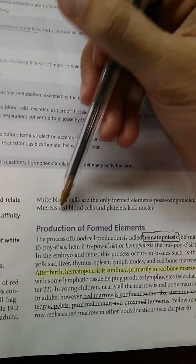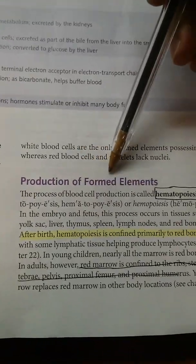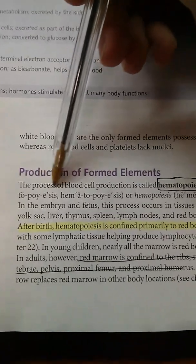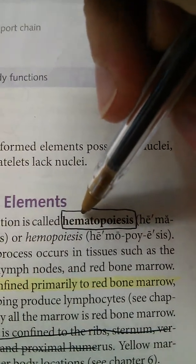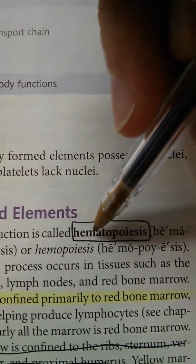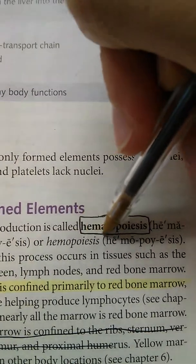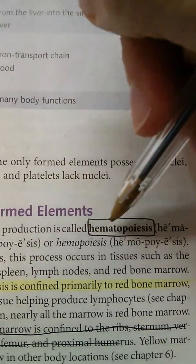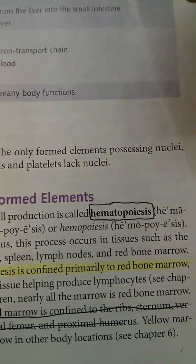Next, we'll be talking about production of formed elements — the red blood cells, white blood cells, and platelets — so this is telling you how they are made. The process of blood cell production is called hematopoiesis. The root word 'heme' here refers to blood, so anytime you think 'heme,' think anything to do with the formed elements.